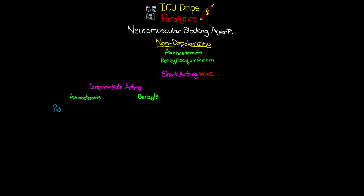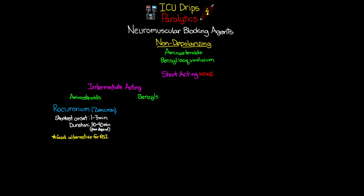The first intermediate-acting amino steroid we'll talk about is rocuronium, also called Zemuron. Of all these medications, rocuronium has the shortest onset of about 1 to 3 minutes, but a fairly long duration of anywhere from 30 to 90 minutes, dose-dependent. Because of its pretty quick onset and somewhat short duration, this is a really good alternative for RSI — rapid sequence intubation — and you're going to see this given pretty frequently for this purpose. Rocuronium can be used as a drip, but typically it's IV push at 0.6 milligrams per kilogram. As a continuous infusion, the dose is usually 0.6 to 0.9 milligrams per kilogram per hour.